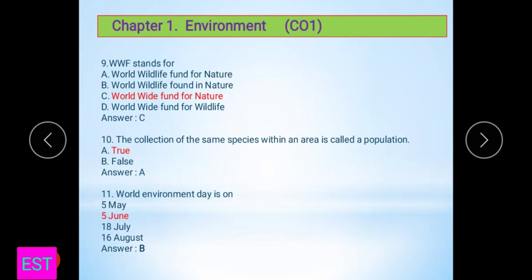Next question: WWF stands for - there are four options. The worldwide fund for nature. This is C option. Next question: The collection of the same species within an area is called populations. The option is in true or false form. It is true.